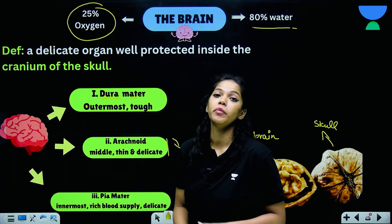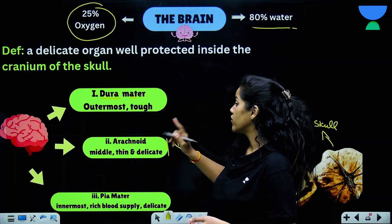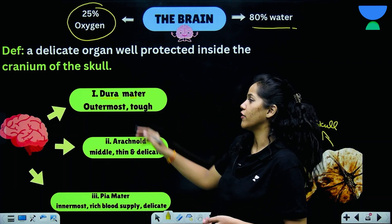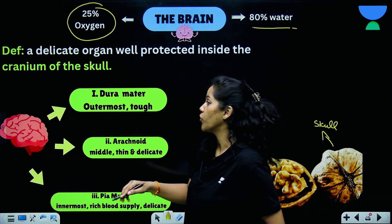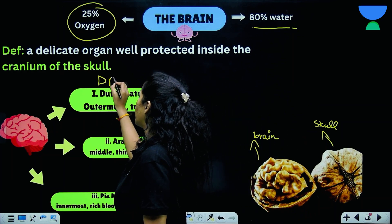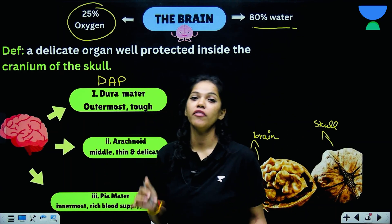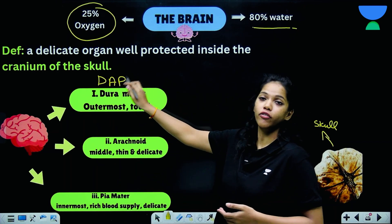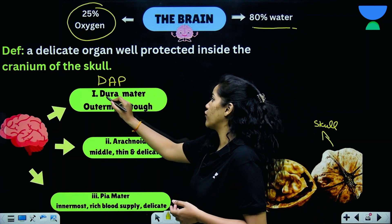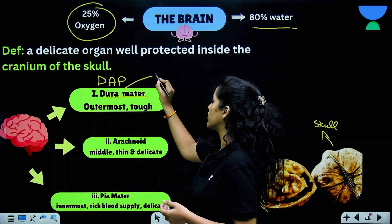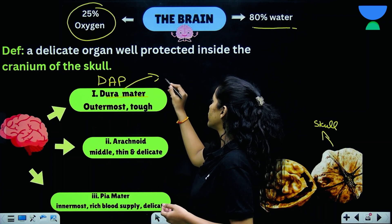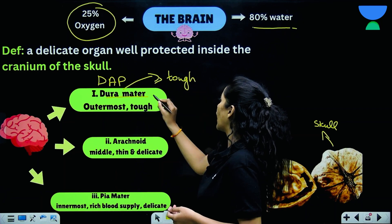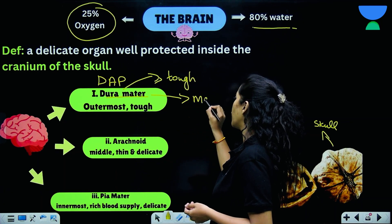The brain has three main coverings: the dura mater, the arachnoid — which is thin and delicate — and the pia mater. To remember these in a shorter form, think of DAP: D-A-P. D stands for dura mater, where 'dura' means tough and 'mater' means mother, so 'tough mother' describes the outermost covering of the brain.